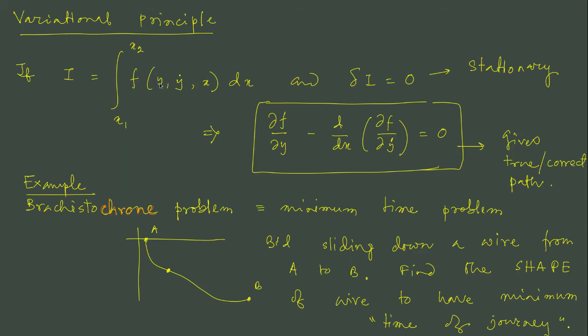So, for example, we have a function f, which is a function of y, y dot and x and integrated over x. Remember, x is playing the role of earlier time. So, this is the independent variable and y is the coordinate. This is basically a 1-D problem.